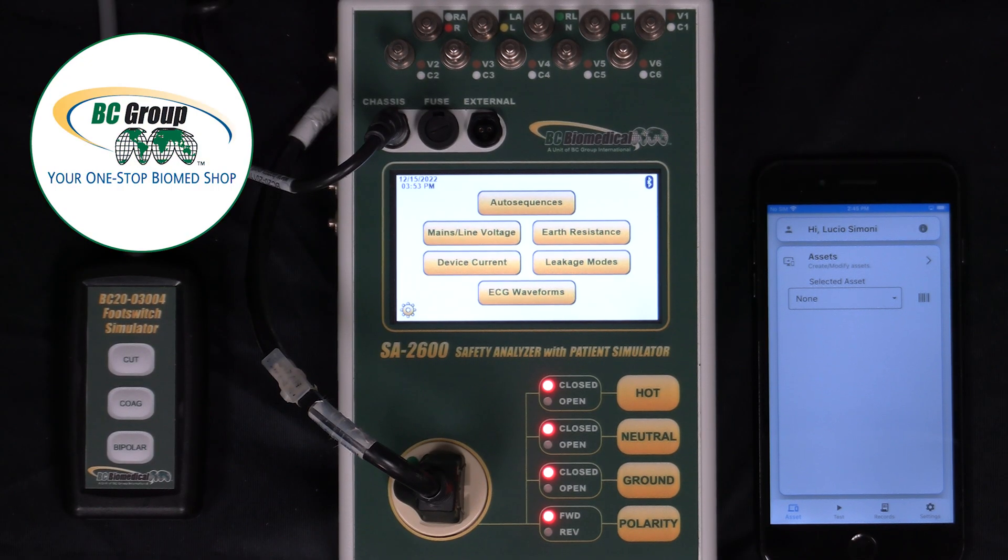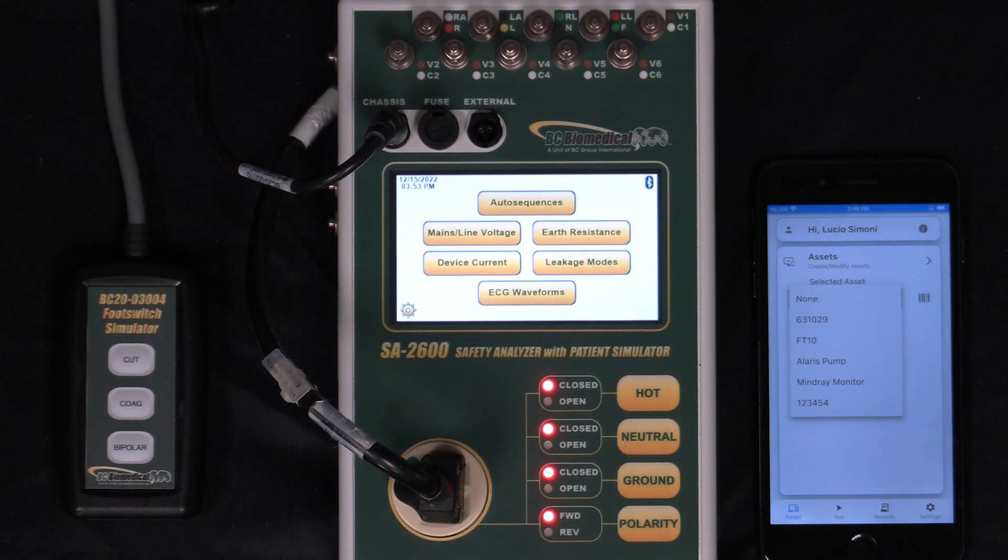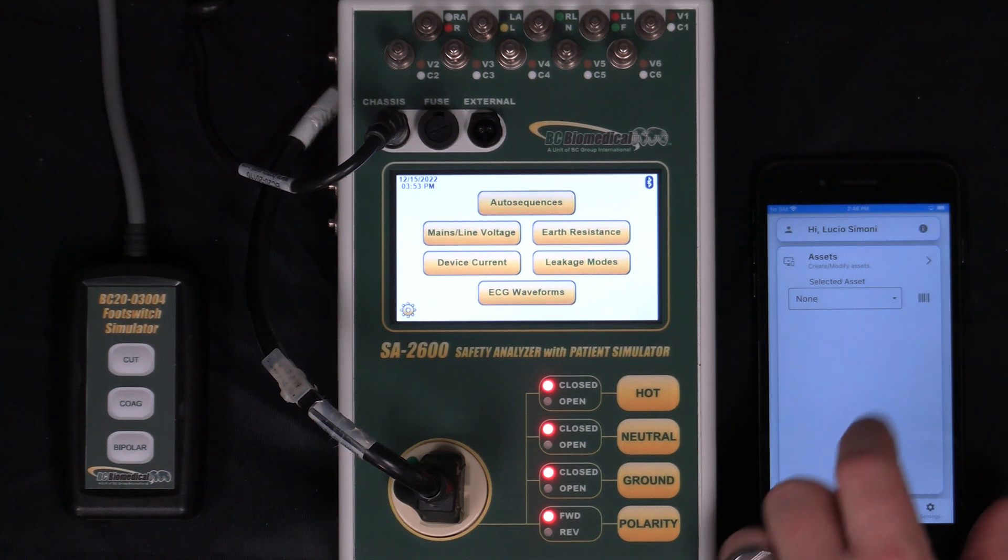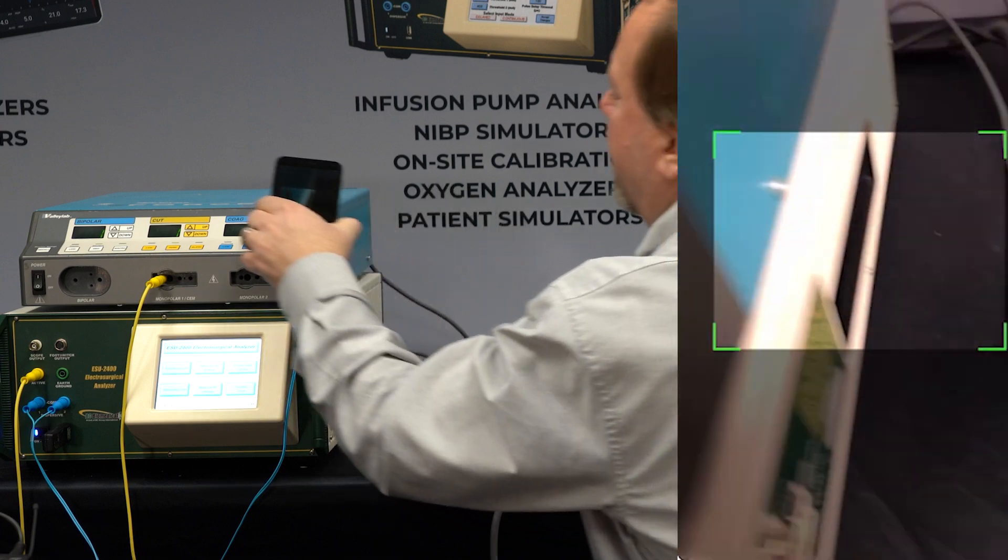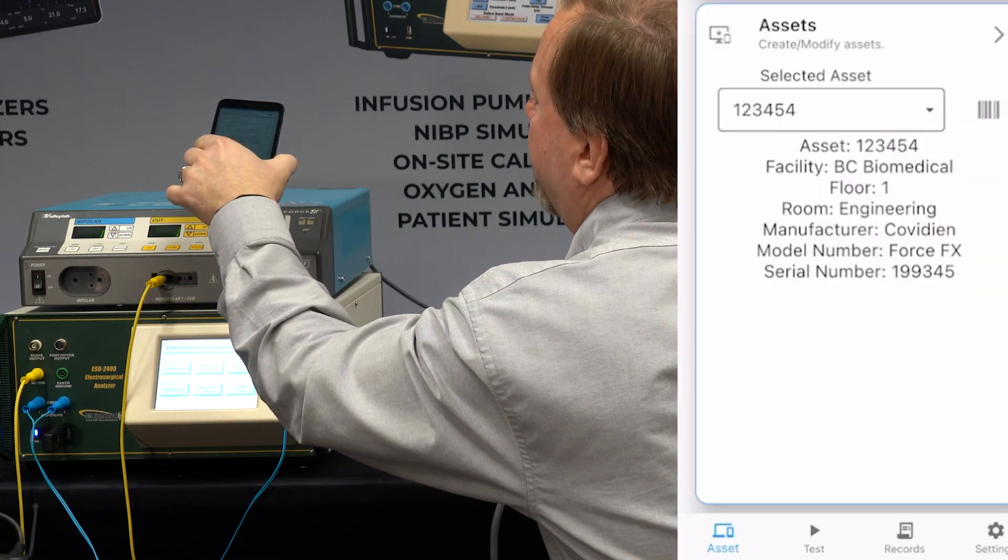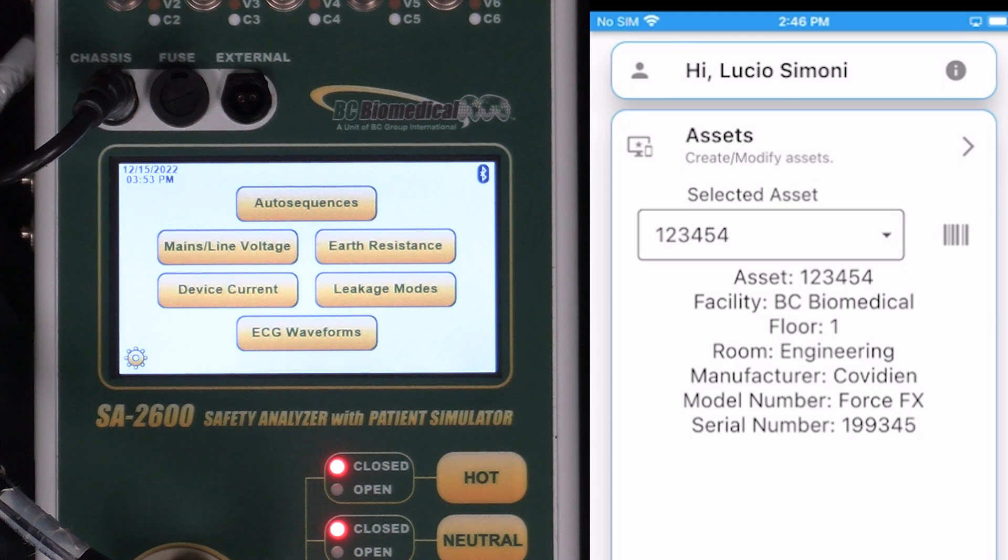The first thing I want to do on MyBC Mobile is select the asset that I'm testing. We can do that either by selecting the drop down list or we can use the barcode scanner. I just press on the barcode and then I scan the barcode on the device I'm testing and MyBC Mobile is loaded with that asset information.